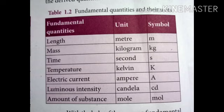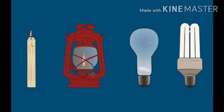The fundamental quantities and their units are also derived in the form of symbols. The fundamental quantities are: length, mass, time, temperature, luminous intensity, amount of substance — along with their units and symbols, as mentioned in our tabular column.